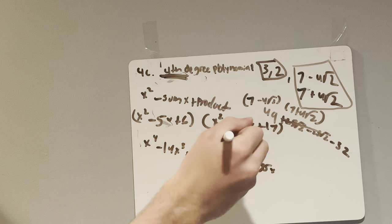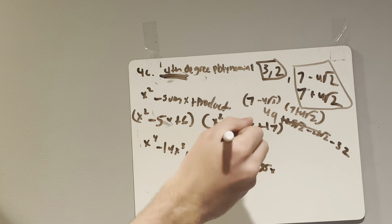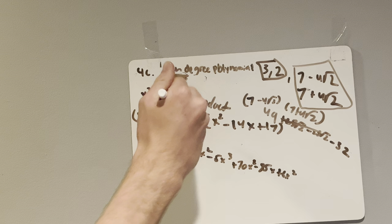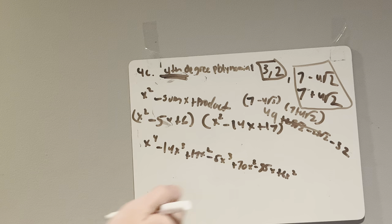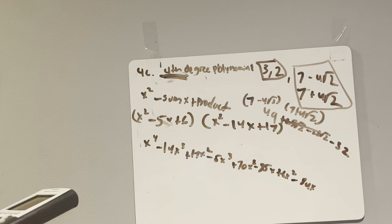Finally, 6 and x squared gives us plus 6x squared. 6 and negative 14x. 6 times 14 is 84, so that's minus 84x. And 6 times 17 is 102.